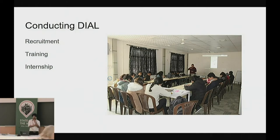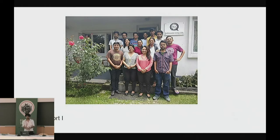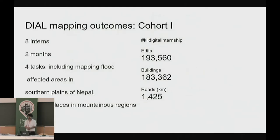So far we have conducted two different cohorts. The first cohort was two months long, for 10 students. Many had a background in geomatics engineering, a few in crisis management, one in architecture, and some in forestry and business administration — a mixed cohort. In that two-month period, the eight interns who continued the program were involved in four big tasks, including mapping flat areas in the southern plains and mountainous regions. They mapped 183,000 buildings and 1,400 roads, though these numbers don't tell the full story.